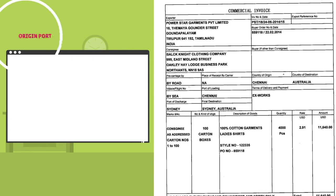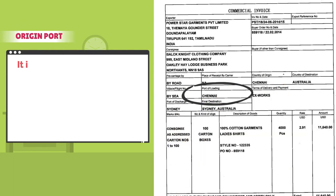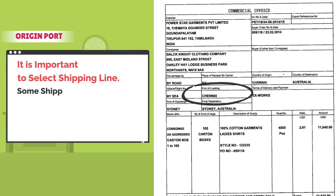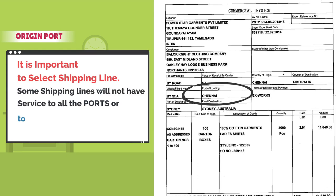Origin port: it is important to select the shipping line, as some shipping lines will not have service to all ports or to the destination port of the particular cargo.